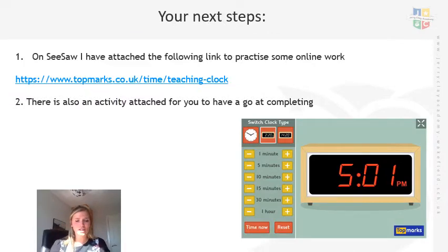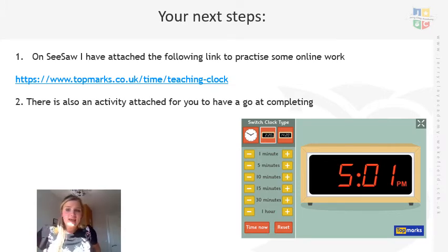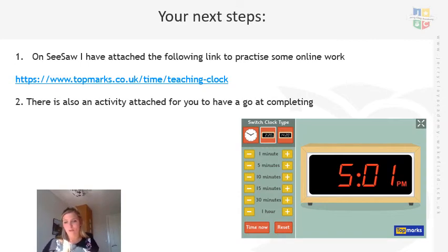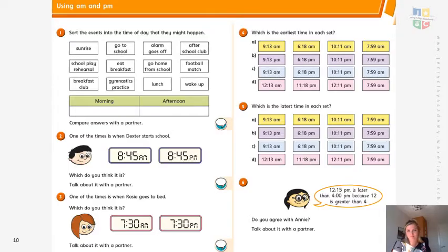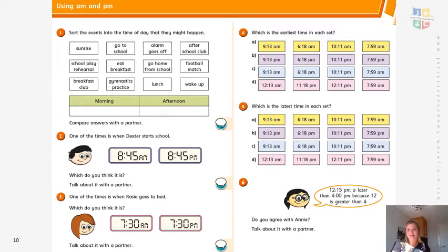I've attached a website link here for you to access the online resource I showed you yesterday. You can practise deciding what time it is, whether it's in the morning or evening. Once you feel like you really understand it, you can go on to the activities which I've attached to Seesaw. There are questions where you need to say where activities happen, questions looking at which is earliest or latest, and can you order the times? I'll be going through the answers on this link, and I'd love to see everything on Seesaw.